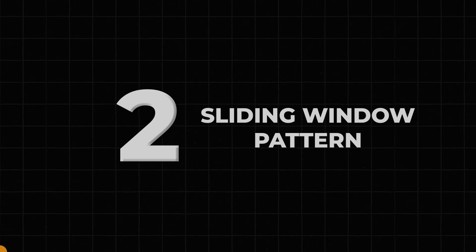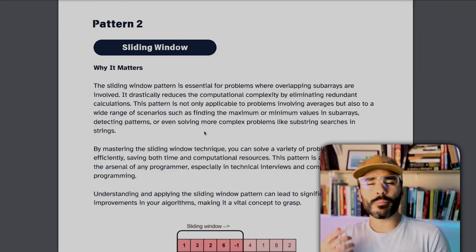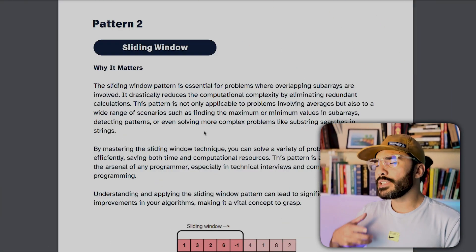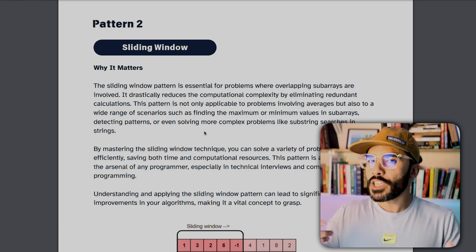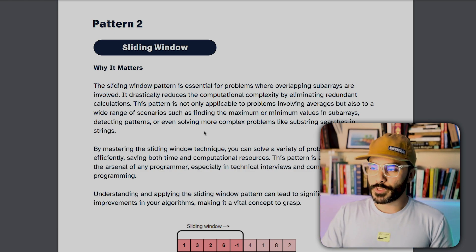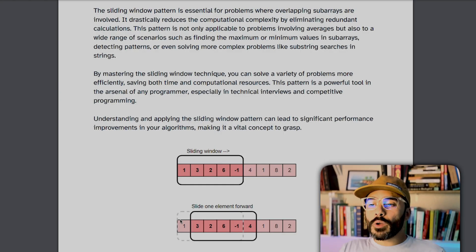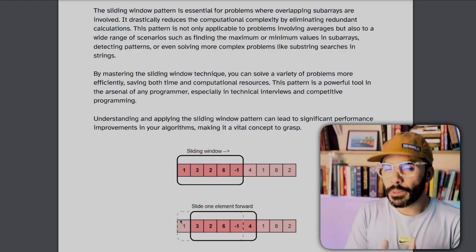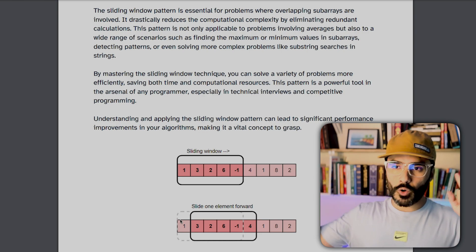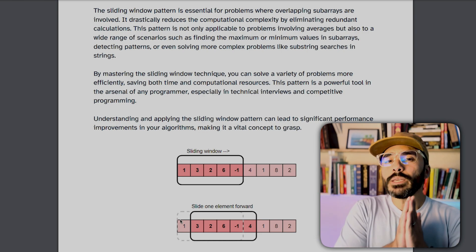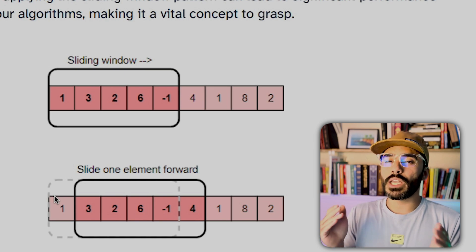Pattern number two is the sliding window pattern. We use it to solve problems typically involving subarrays, linked lists, or strings when we're talking about contiguous subarrays or contiguous substrings. In the sliding window pattern, we see something similar to the two-pointer approach, but instead of just two items we're looking at, we typically have a window of items that we're evaluating.